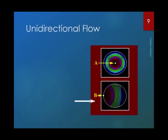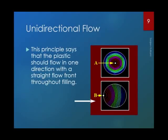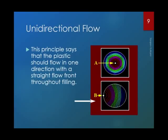The first principle is unidirectional flow. This principle says that plastic should flow in one direction with a straight flow front throughout filling. Here you see two scenarios: a simple central circular disc gated in the center gives an omnidirectional flow front. Whereas if you apply this principle and provide the gate on the side, you get a uniform unidirectional flow pattern. This flow pattern is required for transparent articles made of PMMA or polycarbonate — you get very good optical properties with unidirectional flow.